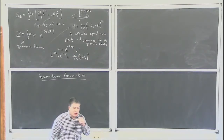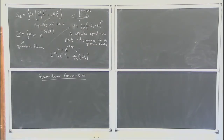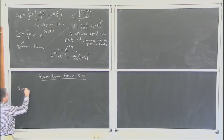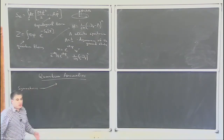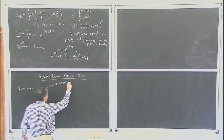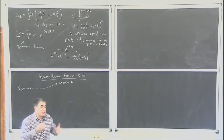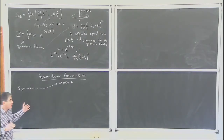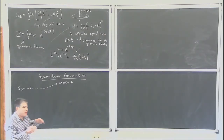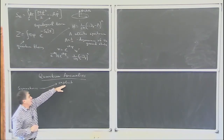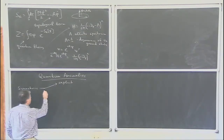Giuseppe Mussardo tomorrow will talk about conformal anomalies — one example of quantum anomalies. Symmetries are very important in physics, and so is the breaking of symmetries. Symmetries can be broken in several ways. The first is explicit symmetry breaking: you add some term or interaction that violates the symmetry. It makes sense to talk about explicit breaking because that term can be particularly small, so you can still use approximate symmetry.